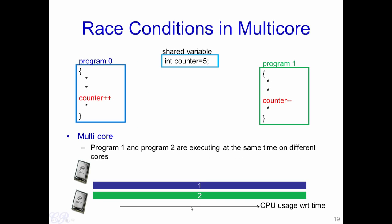Race conditions not only occur in single-core systems but also in multi-core systems. Since each processor in a multi-core system is executing simultaneously, the shared variable could be accessed by both programs at exactly the same time. Therefore, race conditions in multi-core systems are more pronounced compared to single-core systems.